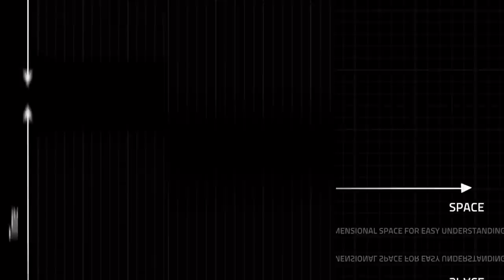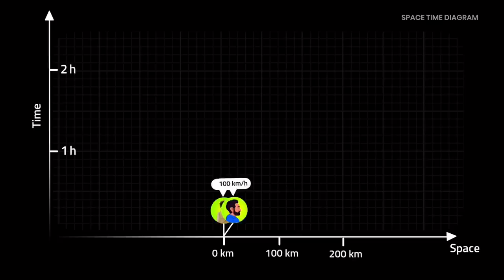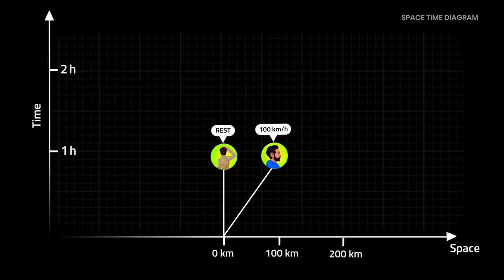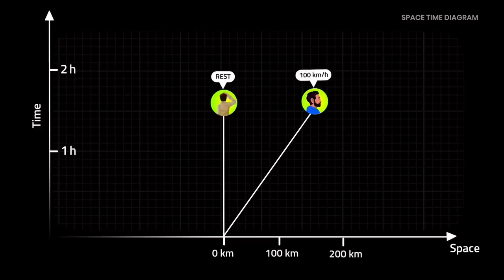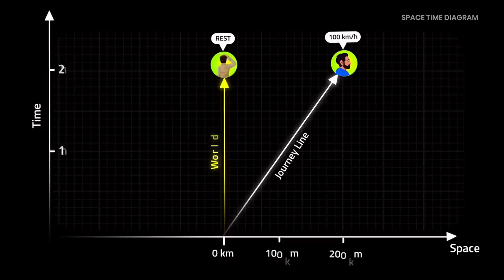You are at rest in space but moving through time. In every time interval you are not moving in space, but your friend moves at a constant velocity of 100 kilometers per hour. Consider time intervals as hours — in time one your friend is 100 kilometers away, in time two he is 200 kilometers away, and so on. By marking your friend's position through space with a time axis we draw their journey line. You are at rest and your friend travels at constant speed — your time axis is called the world line.